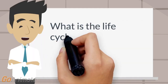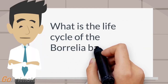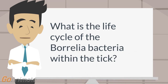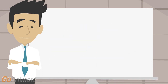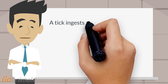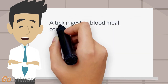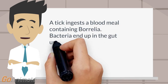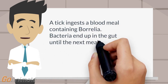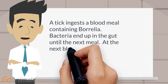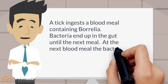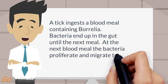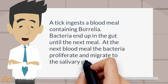What is the life cycle of the Borrelia bacteria within the tick? A tick ingests a blood meal containing Borrelia. The bacteria end up in the gut until the next meal. At the next blood meal, the bacteria proliferate and migrate to the salivary glands.